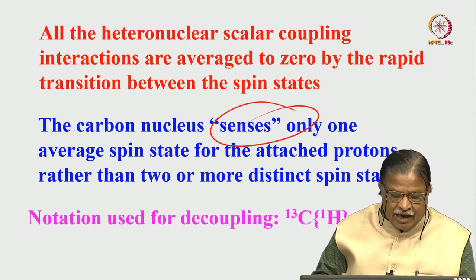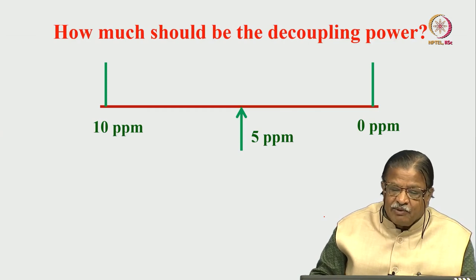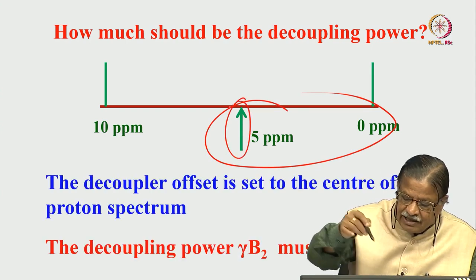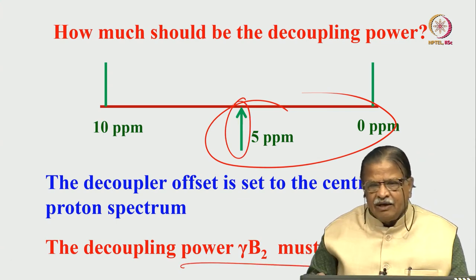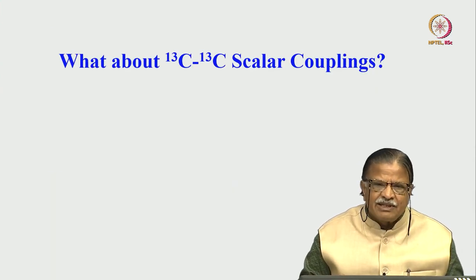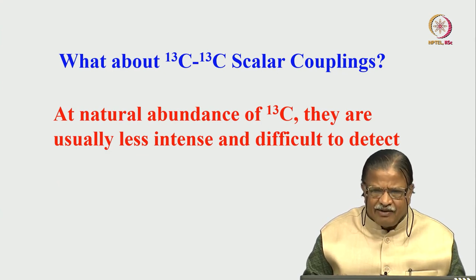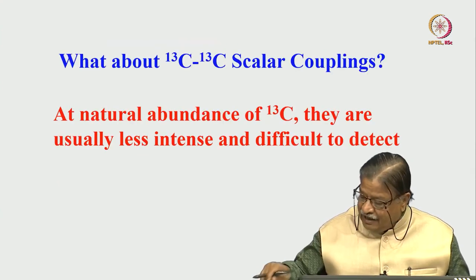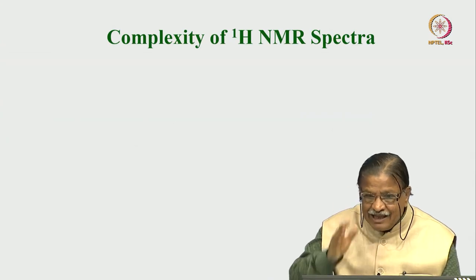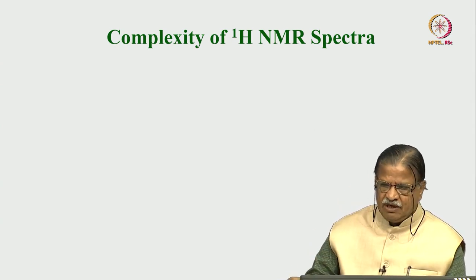As a consequence, all heteronuclear couplings are averaged to zero and the carbon senses only the average spin state for the attached protons rather than two or more distinct spin states. One can mathematically work this out, but this is the conceptual picture. The decoupling power depends upon the strength of the coupling — usually the decoupling offset is set at the center of the proton spectrum, and the decoupling power should be larger than the largest coupling strength, at least twice as large. As for 13C-13C scalar coupling, at natural abundance these are not usually visible and are very weak. Heteronuclear decoupling is easy to do. The question now is what about the complexity of the 1H NMR spectrum — this is where broadband decoupling becomes very important, and it is a topic by itself called pure shift NMR, which we will discuss in the next class.